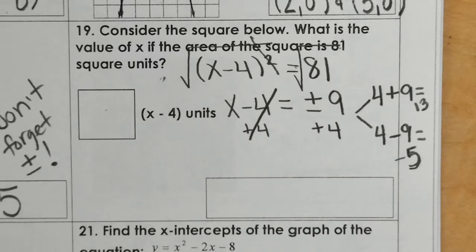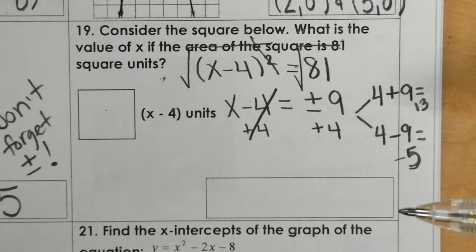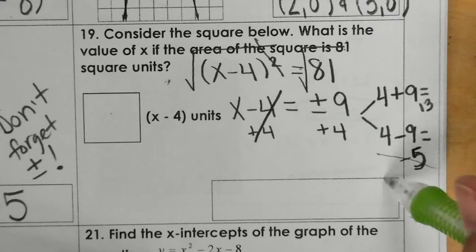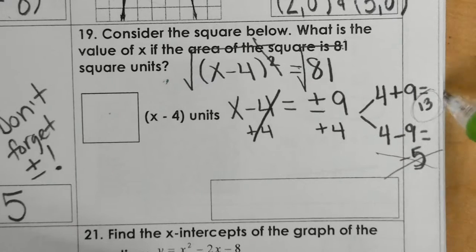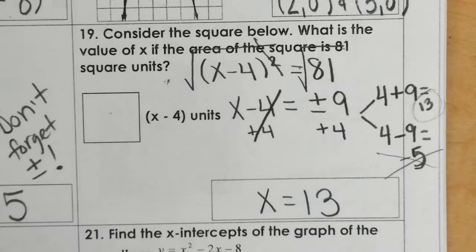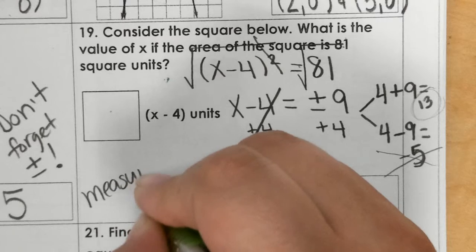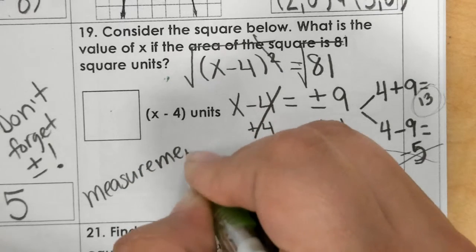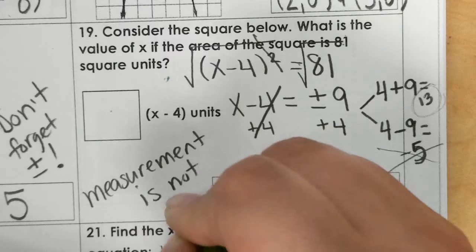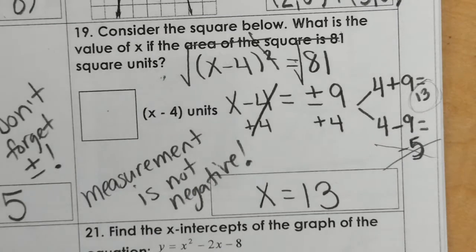Now when we solved this in class, we talked about how this was a story problem and how it's a measurement. Measurement cannot be measured with negative amount. So we can't use a negative. My only solution is the 13. This was special because it's a measurement. Measurement is not negative.